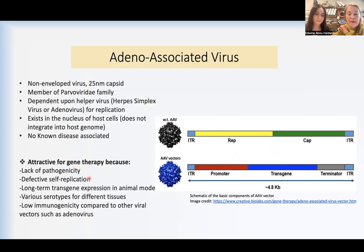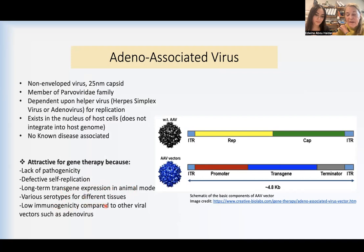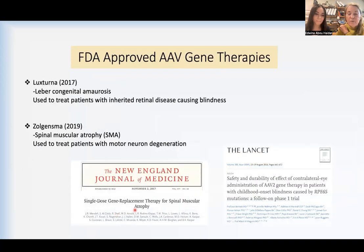The only viral elements it contains are these inverted terminal repeat elements that don't code for anything, but they allow the double strand of DNA to be incorporated into the AAV capsid. These vectors are good for gene therapy because they lack pathogenicity, they can't replicate, and they can achieve long-term expression in cells in humans and mouse models. That depends on whether the cell is dividing or not — if the cell is dividing it can lose these sequences, but non-dividing cells retain them for years. You can have different types of capsids with more affinity for certain tissues, and there's low immunogenicity overall. However, once you apply your gene therapy vector, the individual will develop antibodies to the capsid, making it difficult for the capsid to be efficient at affecting cells subsequently.